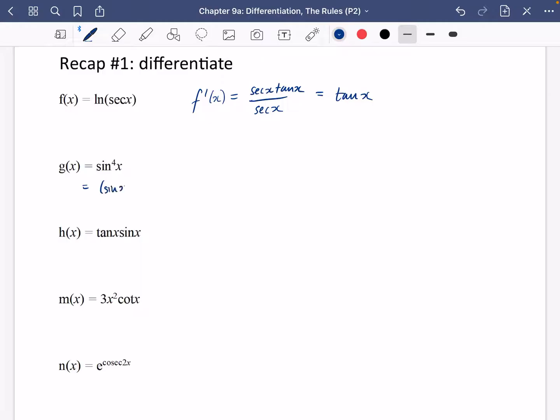This one here, you need to rewrite this as sin x to the power of four, so that g dash x is going to be, if I call this thing over here blah to the power of four, this is then going to be four blah cubed, but you then also need to multiply by the derivative of blah.